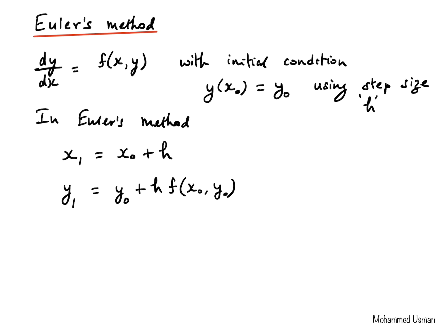Using initial values x0, y0, and h, we compute new values x1 and y1. For example, if x0 equals 0 and h equals 0.1, then x1 equals 0.1. If we want to find the value of y when x equals 0.5 using h equal to 0.1, we need 5 iterations, moving forward in steps of 0.1 from 0 to 0.5.